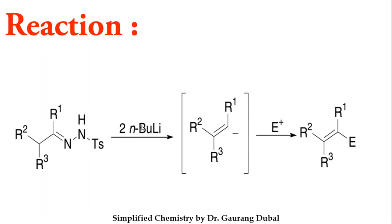When the tosylhydrazone reacts with two molecules of butyl lithium, a carbanion (negative charge) forms. By reaction with an electrophile, a new double bond forms. For example, with H+, you get a simple alkyne. This is the overall reaction for the Shapiro reaction, and now we are going to learn the detailed mechanism.